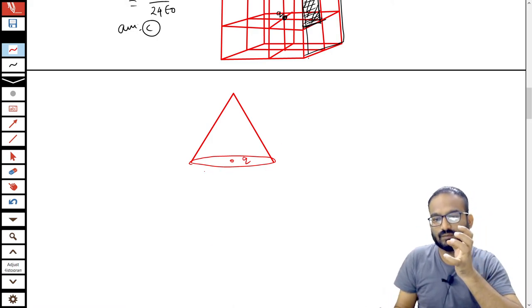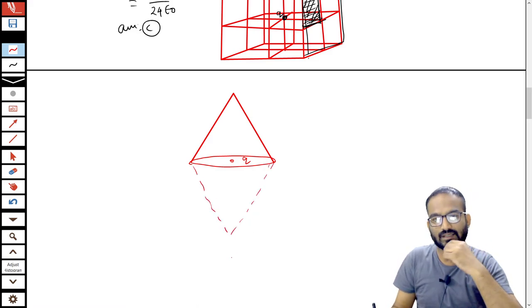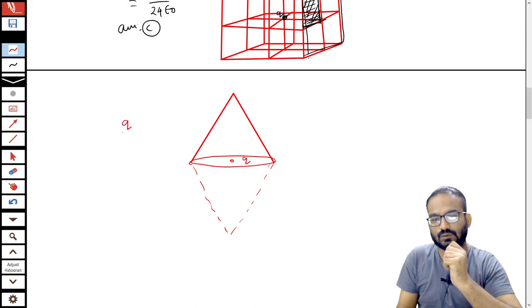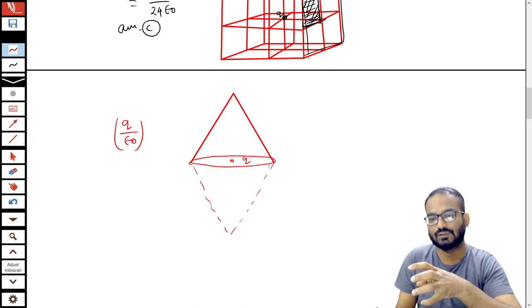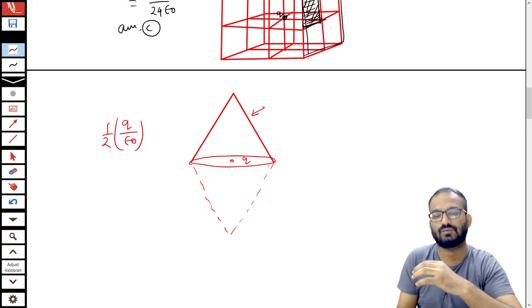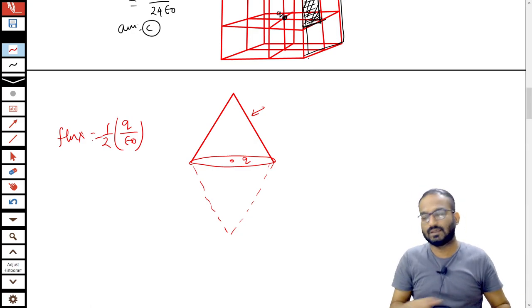Simply, first of all, what you have to do? You have to enclose this charge. So to enclose this charge, we can make another cone like this. So through this whole cone, up and down, the total flux is Q by epsilon naught. Now we can write, because Q is now enclosed, but we have to find out the flux through only one cone. So this will be half Q by epsilon naught. So I hope you have understood. If you have any query regarding this problem, you can let me know in the comment section.